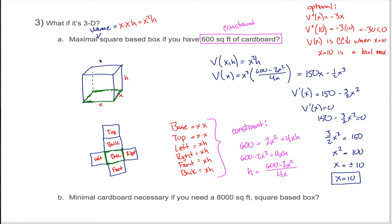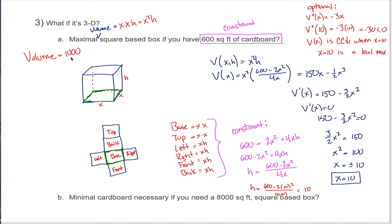The question was: what is the maximal volume of a square-based box if you have 600 square feet of cardboard? We found x equals 10, which is the length of one side of the square base. We can now find h using our constraint: h equals (600 minus 2 times 10 squared) divided by (4 times 10), which is (600 minus 200) divided by 40, or 400 over 40, so h equals 10 as well. The maximal volume is 10 times 10 times 10, which is exactly 1,000 cubic feet.